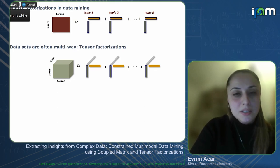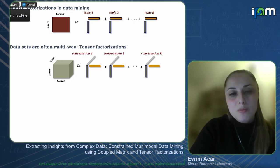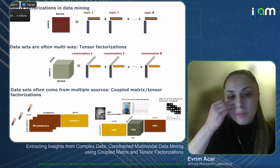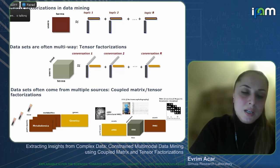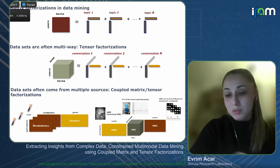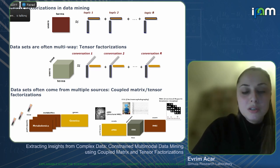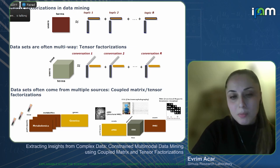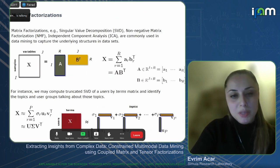If we analyze data using a tensor model, we can find the conversations going on in the data. More and more applications involve data from different sources — in omics data fusion, neuroscience neuroimaging from multiple modalities — and an effective way is to formulate the problem as a coupled matrix tensor factorization problem. Before discussing coupled models, let's go over matrix and tensor factorizations in more detail, since the coupled models build on these.